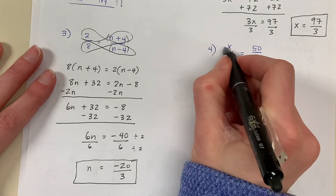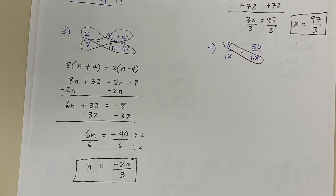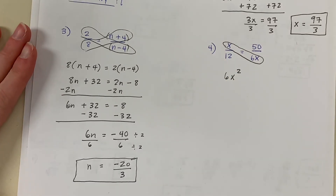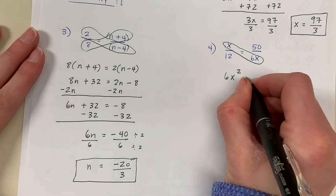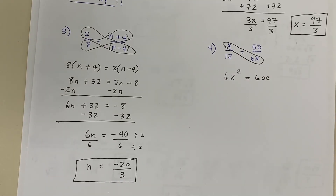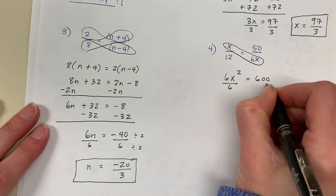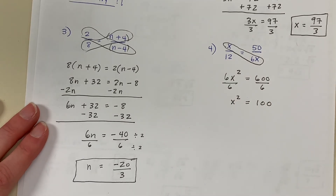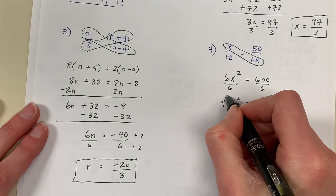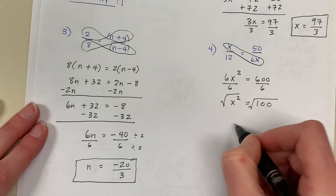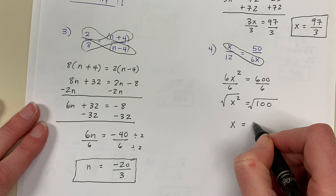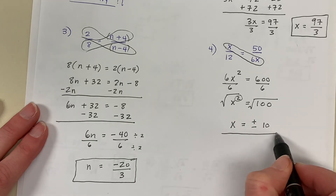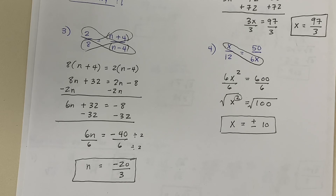Problem number 4: I'm going to cross multiply. I have x times 6x is 6x squared, and 50 times 12 is 600. I need to solve this equation for x. I isolate the variable by dividing both sides by 6: x squared equals 100. Now to simplify x squared down to x, I take the inverse of squaring, which is the square root. The square root of x squared is x, and the square root of 100 gives two answers because it's squared: plus or minus 10. So I have two answers — positive 10 and negative 10.